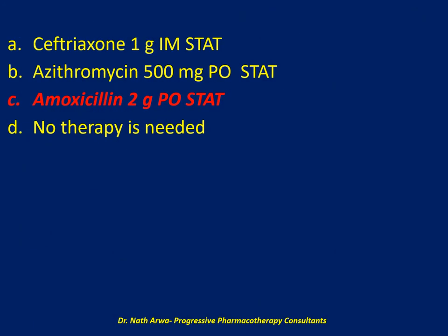Amoxicillin 2 grams orally stat would be the best prophylactic option. Mr. ITP has a history of infective endocarditis and is undergoing a procedure requiring manipulation of the gingival tissue, so prophylaxis is required. Amoxicillin is the drug of choice and should be administered 30 minutes prior to the procedure. Azithromycin is reserved for patients with penicillin allergy — this patient has no known allergies. Ceftriaxone is used in patients who cannot take oral prophylactic regimens.